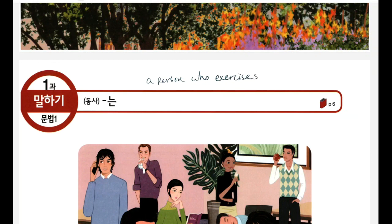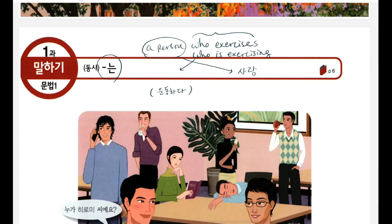In Korean, we can say 'a person who exercises' or 'a person who is exercising' — either way. 한국어로 어떻게 말해요? The noun 사람 is located later, and the modifying part goes in front. 그래서 운동하는 사람. A person who exercises or is exercising goes 운동하는 사람 in Korean. 이렇게 말해요.